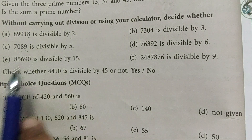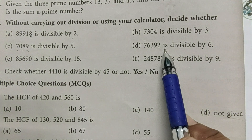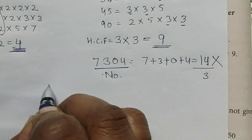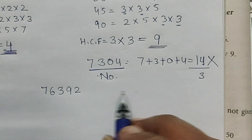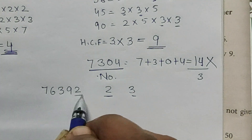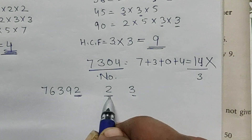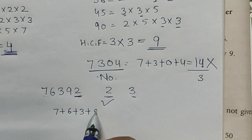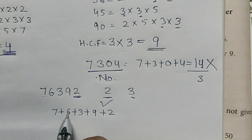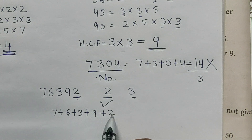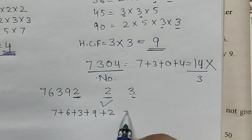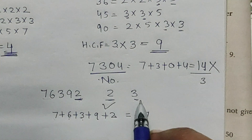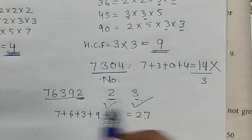Is 76392 divisible by 6? For divisibility by 6, the number must be divisible by both 2 and 3. The unit place has 2, which is even, so it is divisible by 2. For divisibility by 3, we add the digits: 7 + 6 + 3 + 9 + 2 = 27. Since 27 is divisible by 3, the number is divisible by 6. Answer: Yes.